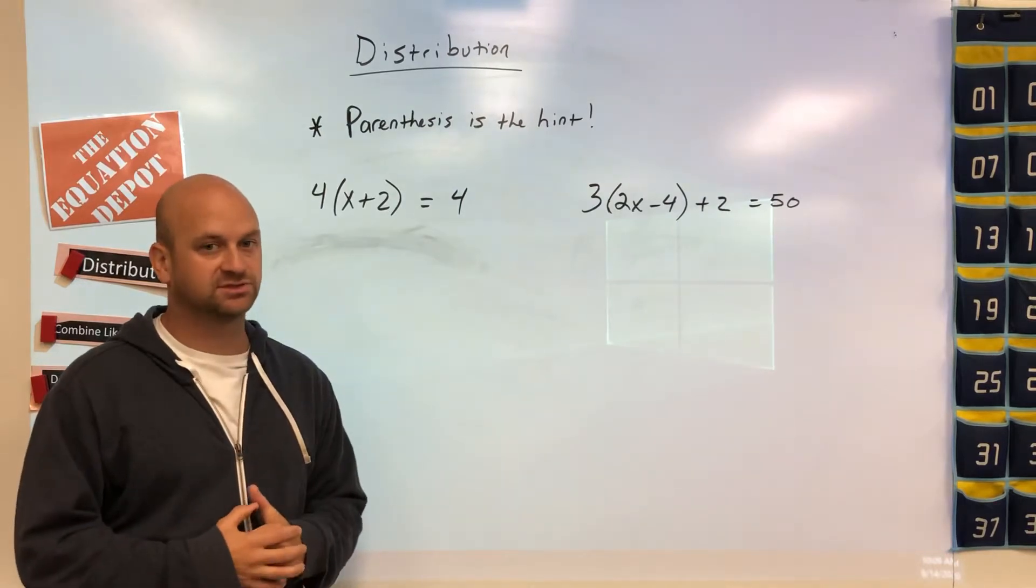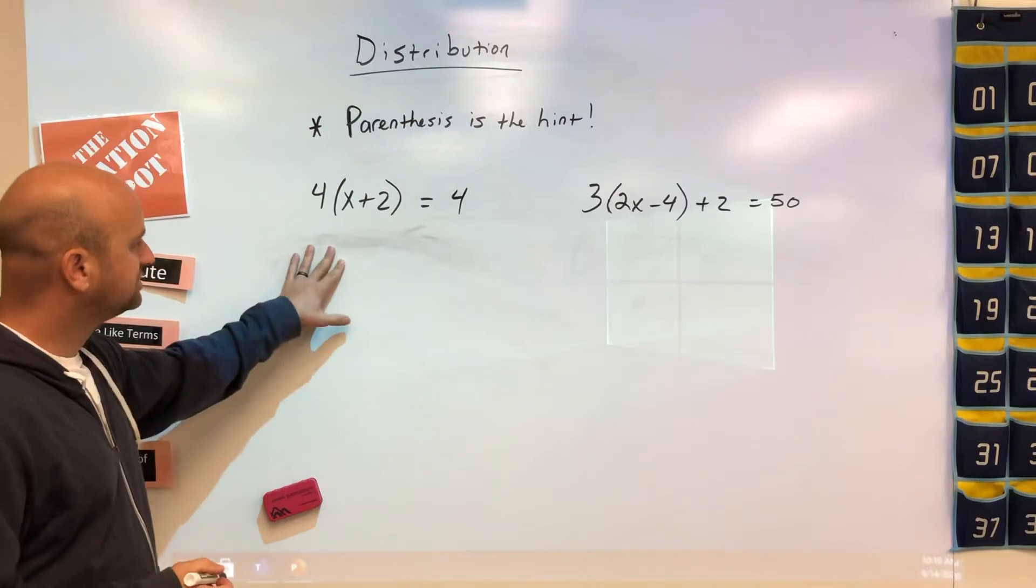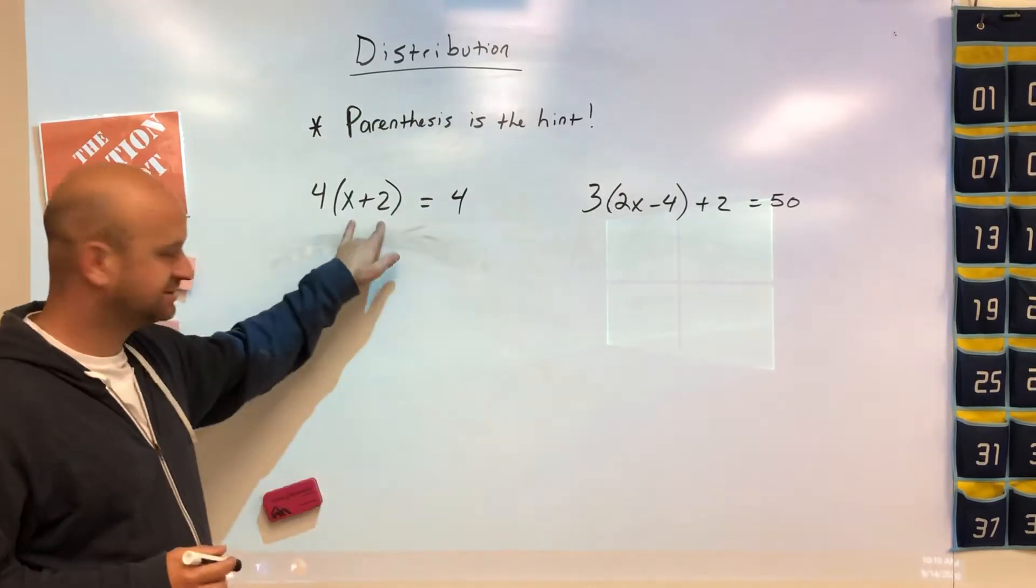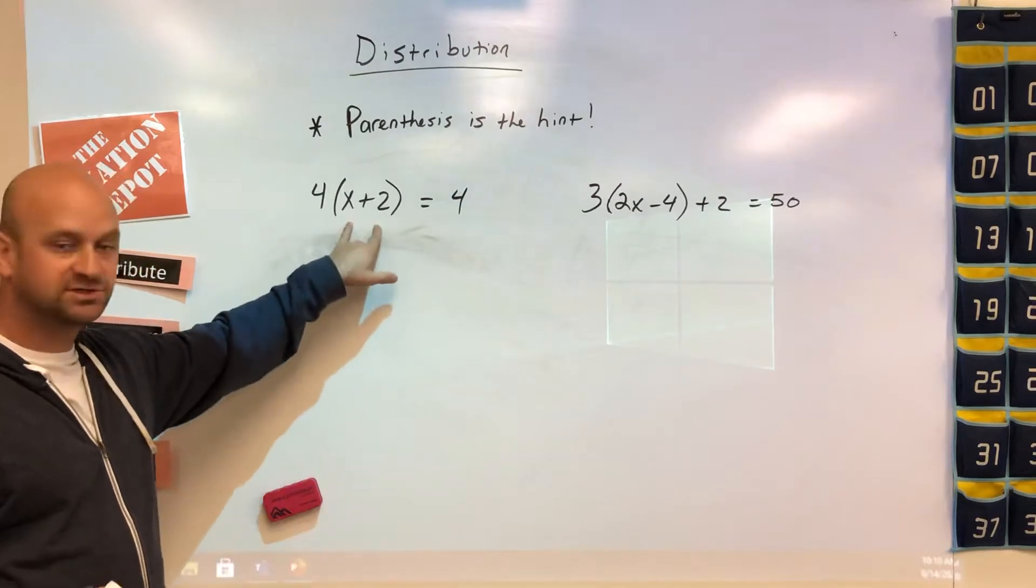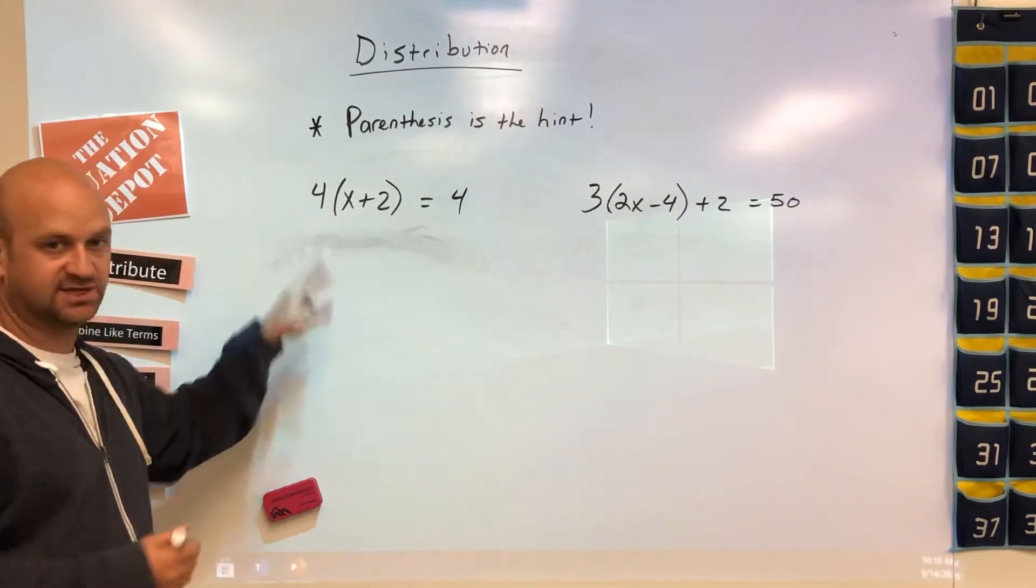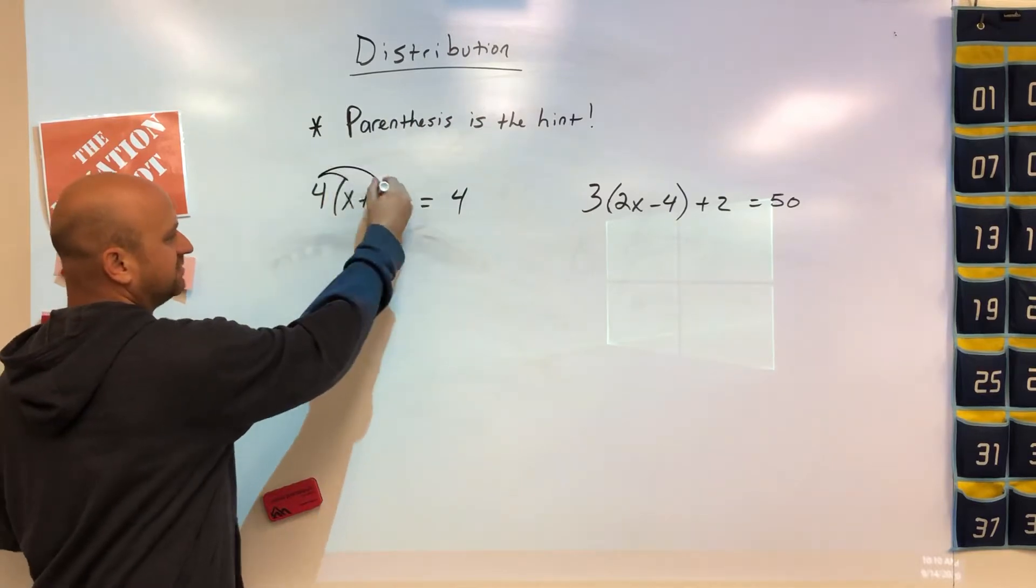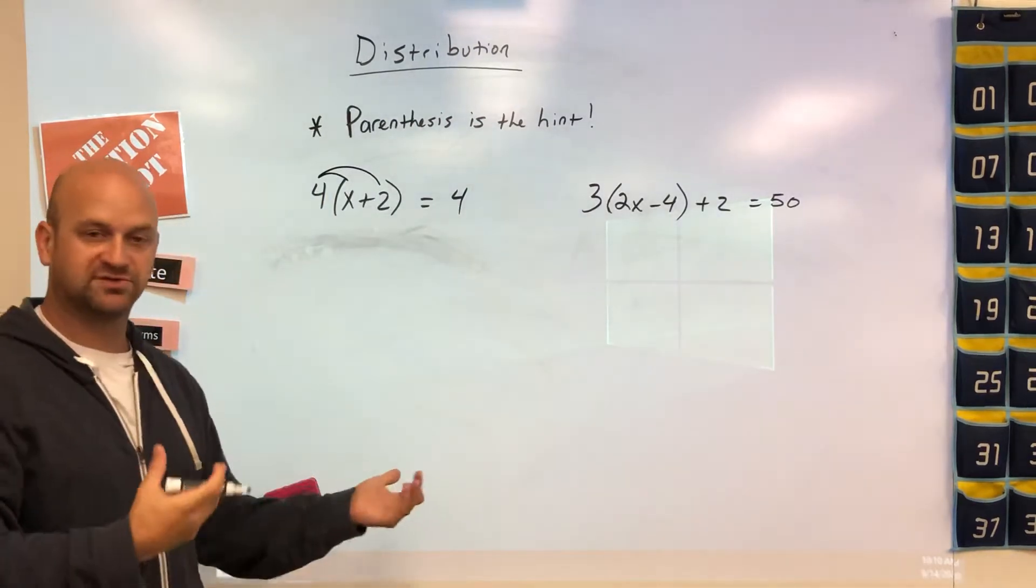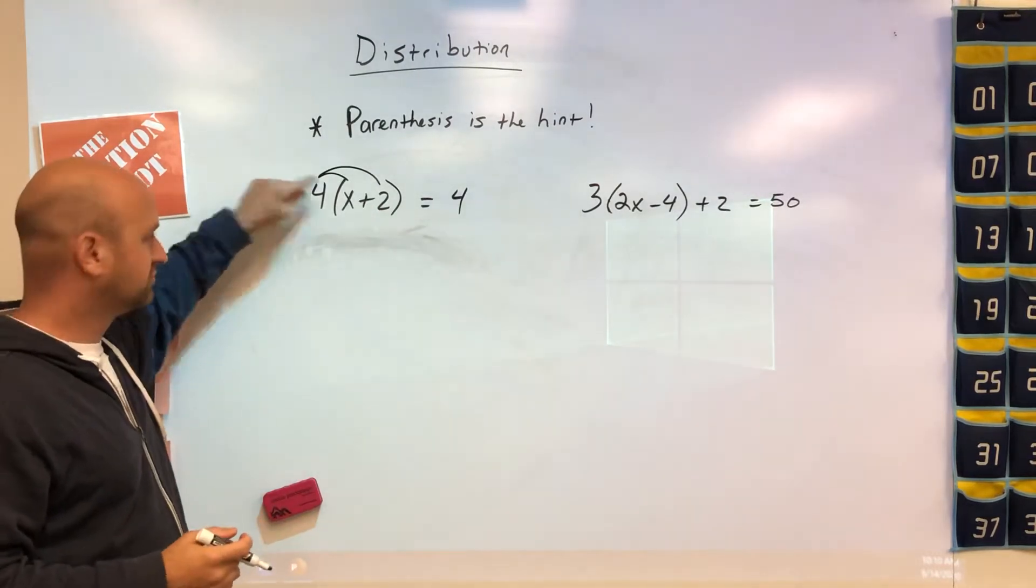When we do distribution, think of it as your friends going to someone's house on Halloween for candy. Your friends are in the parentheses and the house is outside. When you go to that house, that person will give both of you candy. What a lot of teachers do, including myself, is we'll draw lines on top to make sure every person in that parentheses gets their candy.